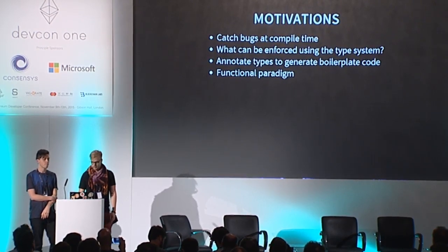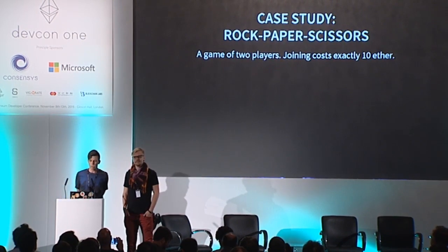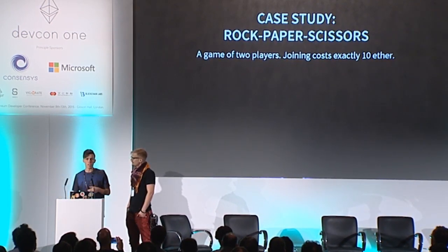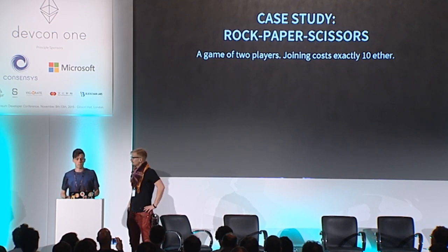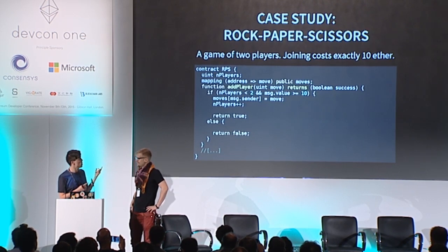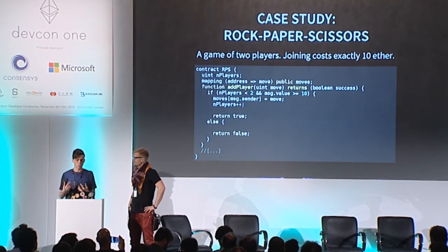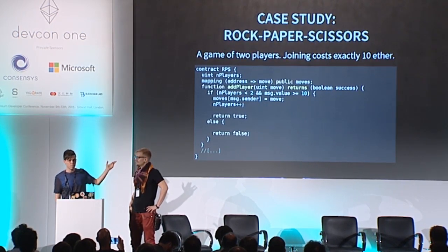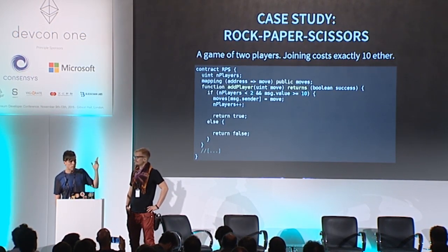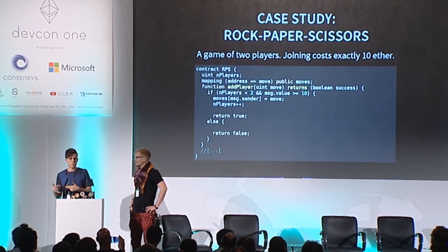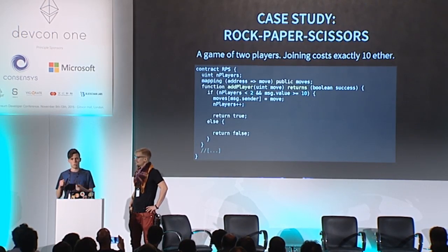Jack will now present two types of errors that programmers usually make when they start developing smart contracts, and how we can catch them at compile time. We look at a simple example: a game of rock-paper-scissors played for money. Joining costs 10 ether and the prize is 20 because there are two players. Here is a small example of how the function that lets players join the game could look — the game can only be joined if it isn't full, the player has to pay the fee, and if both conditions are met we save the move and the address of the player. The move is represented as zero, one, or two for simplicity.